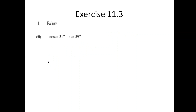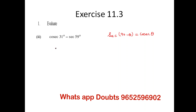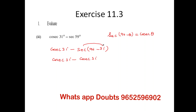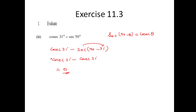Let's look at the next sum. What is the relationship I need to use here? I need to use cosec(90 minus theta) equal to sec theta. I can write this as cosec 31 degrees minus sec(90 minus 31). The overall resultant of this one comes out to be sec 31 minus sec 31, so the resultant becomes 0.